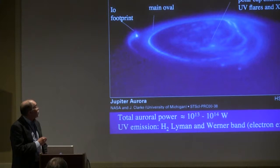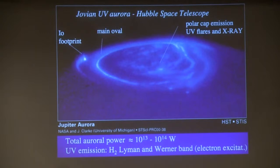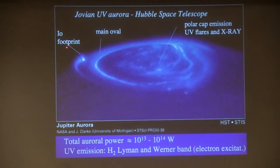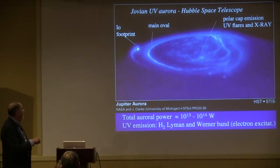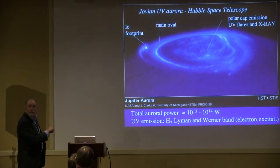You've seen this before from Melissa. This is another iconic image from John Clark — the ultraviolet emissions and Lyman-Werner bands from Hubble STIS, showing the main auroral oval where most of the power is. Here's the Io footprint and a couple of other Galilean satellite footprints. I'm going to focus on this polar cap emission. What you've seen is the ultraviolet emission.